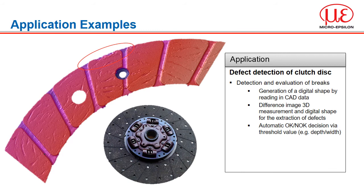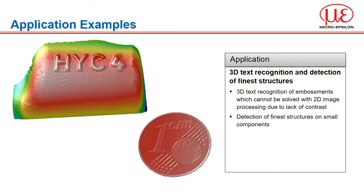This application is looking for defects on the edge of a clutch disk. Here we are utilising third-party software that compares the CAD model to the 3D capture and allows determination of OK and not OK conditions. And while we cannot perform optical character recognition directly, many vision tools are able to do this, provided they have the right data. We are able to extract the height or depth information to present the data in a way that vision tools can then read and also determine the quality of the embossment or the imprinted text.